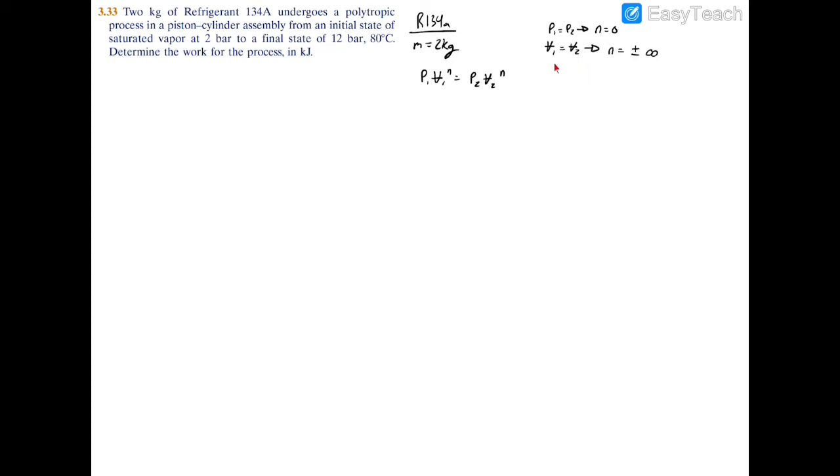It's important that we get the correct N value because we need it to find the work of a polytropic process. If the polytropic index equals one you would find work via this expression, and if it's not equal to one you'd find work using this expression.